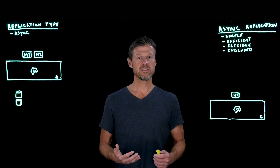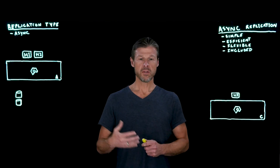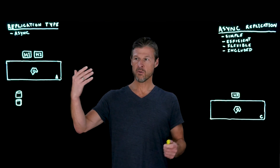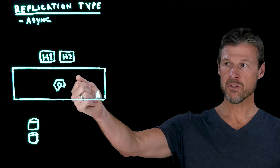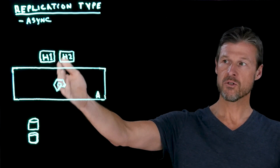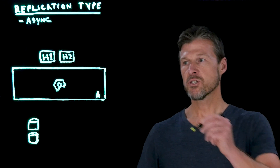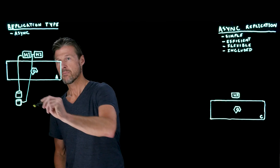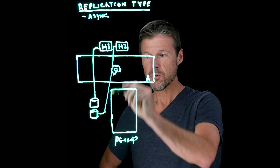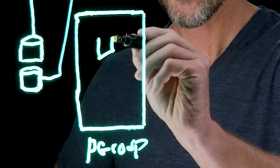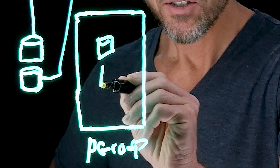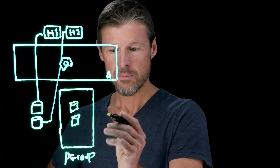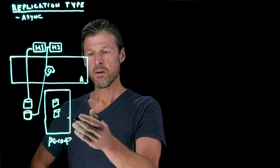To start off we have two arrays, array A and array C. We've got hosts connected to array A — host 1 and 2 — and they're mapped to two volumes, each running different applications. The way we do asynchronous replication is we use something called a protection group. We put the two volumes that correspond with host 1 and host 2 applications into a p-group.